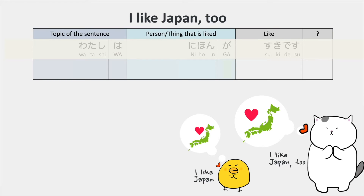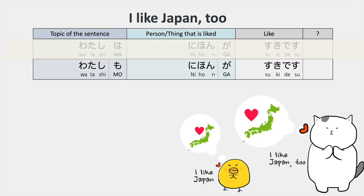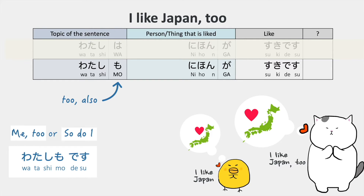I like Japan too. Watashi mo Nihon ga suki desu. We've learned that we can replace wa with mo to express also. When you just want to say me too or so do I, you can say watashi mo desu.